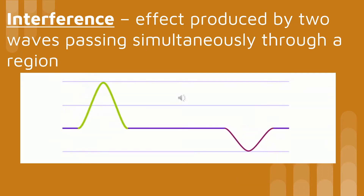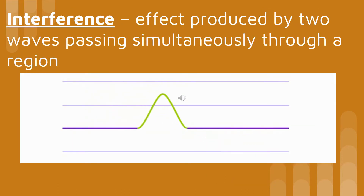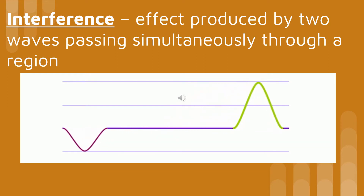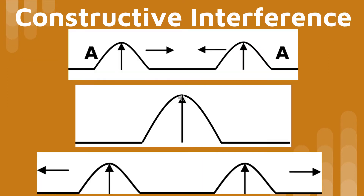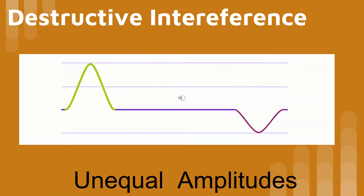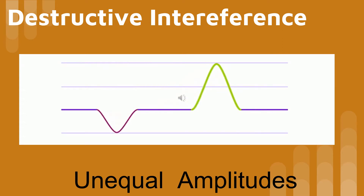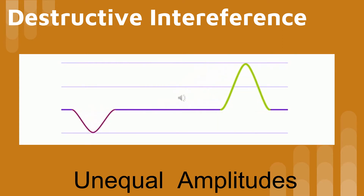Interference is in effect produced by two waves passing simultaneously through a region. Constructive interference occurs when a crest meets a crest, or a trough meets a trough. A crest of two meets a trough of one. When they overlap, they produce a crest of one.